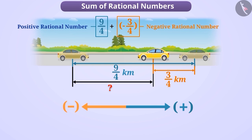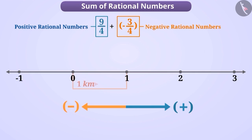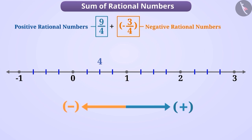Let us find the result of the sum of these rational numbers on the number line. We will draw a number line assuming 1 km distance as a unit and mark the integers with 0 on it. We see that the denominator of both rational numbers is 4. The number written in place of the denominator tells how many equal parts of the unit have been made — here 4 tells us that each unit is divided into 4 equal distances. So we will make 4 equal parts of each unit distance of the number line.